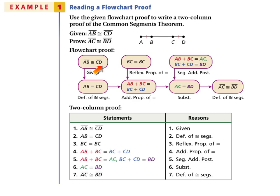As you can see in the flowchart, AB and CD are both congruent — that's the given. The second step is AB equals CD by definition of congruent segments. Then the length of BC is congruent to itself by reflexive property, which is step three.